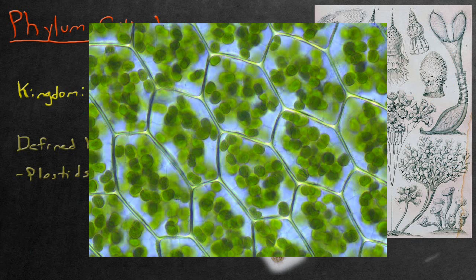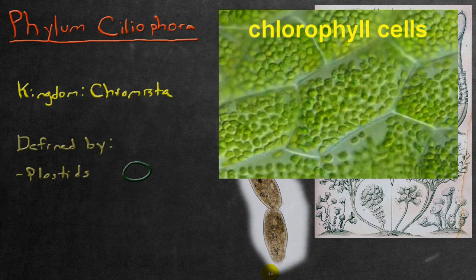These plastid organelles serve many purposes depending on the species. For example, they can be used for photosynthesis. In that particular case, these plastids would have the presence of chlorophyll.